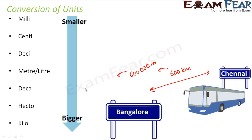If you want to measure the same distance in millimeters, then it becomes 6 followed by eight zeros millimeters. So the more convenient way to express the distance between two cities is using kilometers, because it is extremely tedious to remember the number of zeros after 6 in millimeters. That is why wherever we are dealing with bigger distances, we use bigger units like kilometers or hectometers, and for smaller distances we use millimeters.